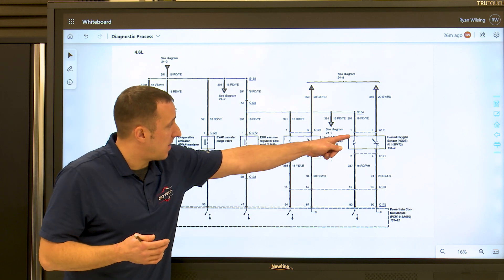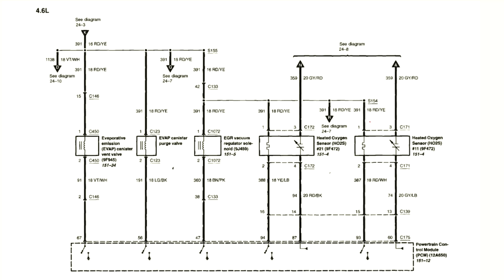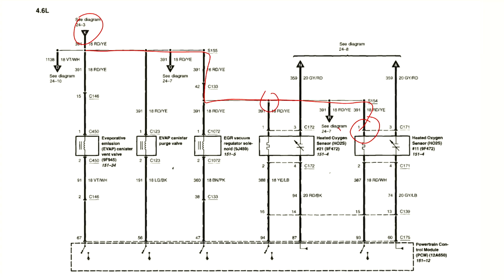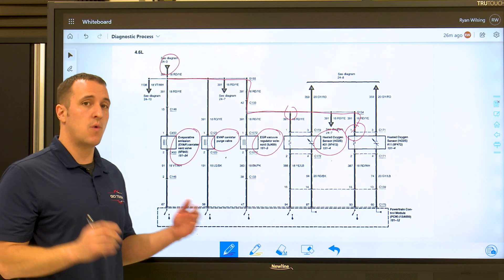With any O2 sensor heater code, looking at the wiring diagram, we have to make sure it has power. We checked here with the key on and we had no power — so we're not getting any power to our heater. Let's follow the wiring diagram. It looks like the wiring goes all the way up to point K. But before we go that far, look what else we can see: it also splices to another oxygen sensor, the EGR solenoid which did throw a code, the EVAP purge solenoid which is one of the codes, and an EVAP vent valve which is also one of our codes.